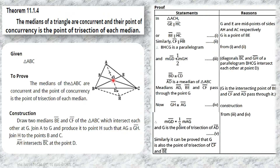Let G be the point where medians BE and CF intersect. Join A to G and produce AG to point H such that AG is congruent to GH — we produce the line so that GH equals the length of AG. Then join H to points B and C. The line AH intersects BC at point D.